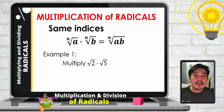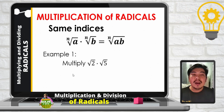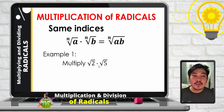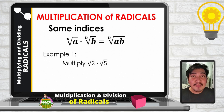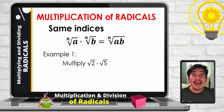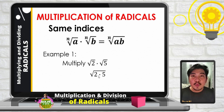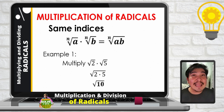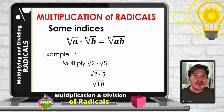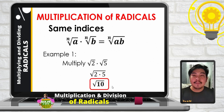Let us have example number 1. Multiply square root of 2 times square root of 5. Since both indices are 2, we can combine them into one radical symbol and multiply the radicands. So we now have the square root of 2 times 5, which is the square root of 10. Since 10 is not a perfect square, the final answer is square root of 10.